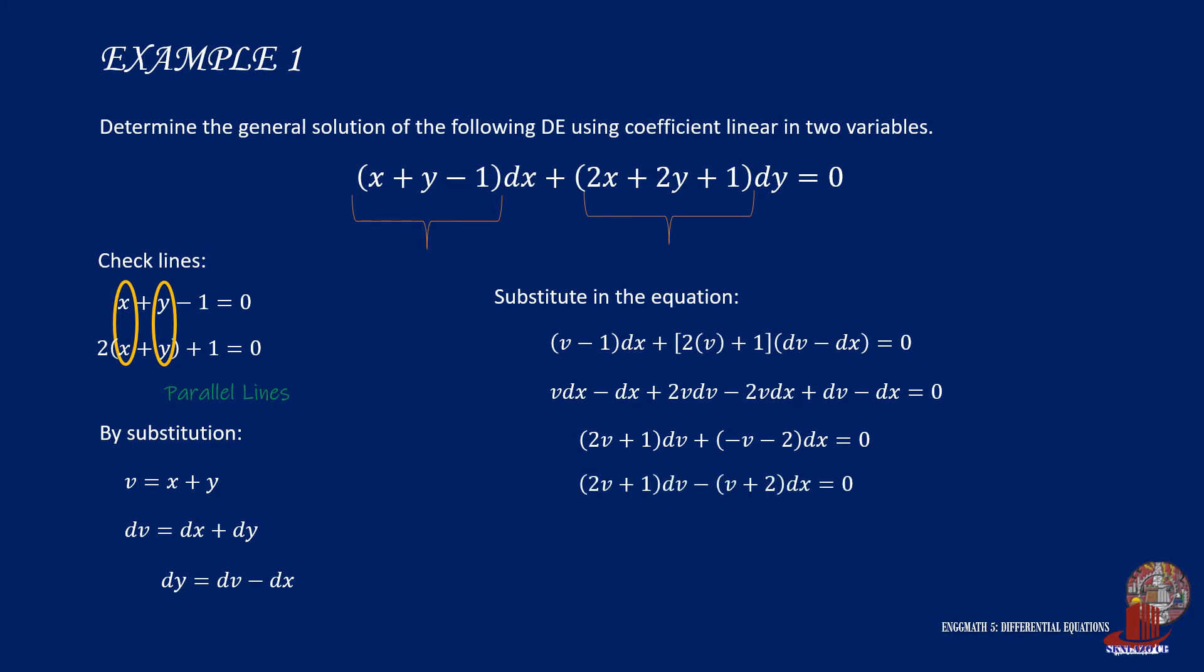Factor out the negative signs from the terms in the second group, thus we get the following equation. Since the terms are simplified between v and x, we can transpose the term on the other end and it would be noted that dx can stand alone and all terms with v can stay with dv. Now we can have a variable separable equation.